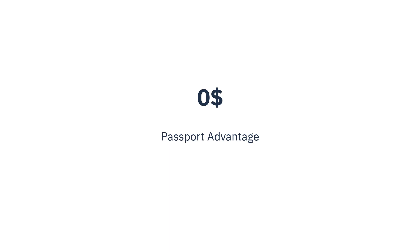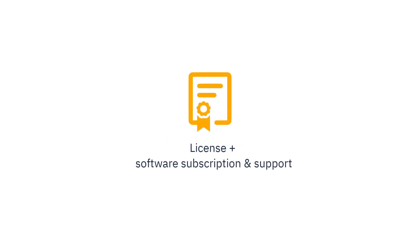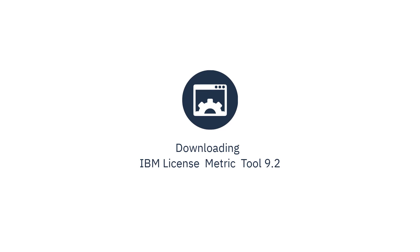Downloading the LicenseMetricTool installer. Before you can download the LicenseMetricTool installer, you need to place a $0 order on Passport Advantage. Although LicenseMetricTool is free of charge, ordering it through Passport Advantage establishes an IBM entitlement record for the LicenseMetricTool license as well as software subscription and technical support. After you place the order, the LicenseMetricTool all-in-one installer for Linux becomes available on your Passport Advantage account. For information about the part number and the name of the installation package, refer to the downloading IBM LicenseMetricTool 9.2 tech note, which is updated with the latest package details.